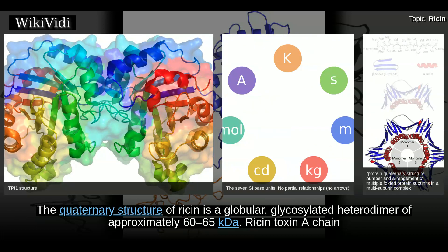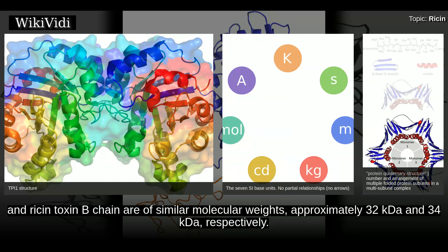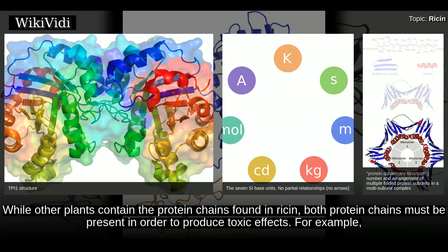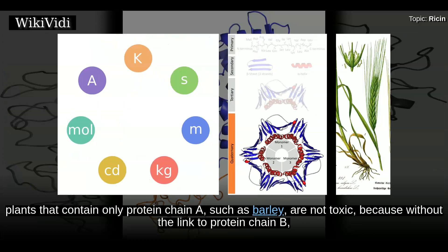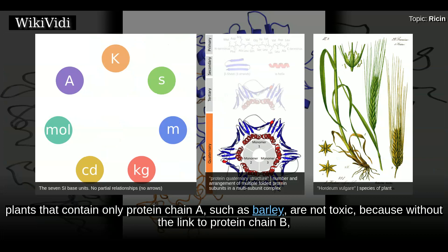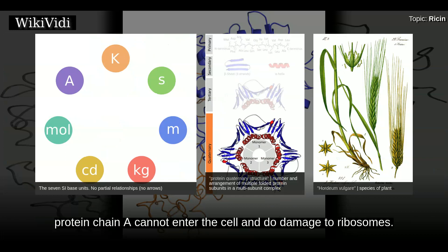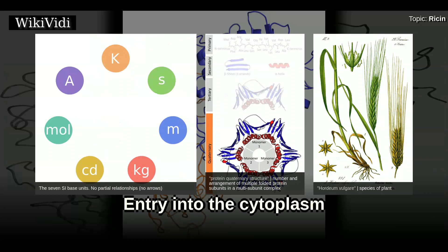The quaternary structure of ricin is a globular glycosylated heterodimer of approximately 60–65 kDa. Ricin toxin A chain and ricin toxin B chain are of similar molecular weights, approximately 32 kDa and 34 kDa respectively. While other plants contain the protein chains found in ricin, both protein chains must be present to produce toxic effects. For example, plants that contain only protein chain A, such as barley, are not toxic because without the link to protein chain B, chain A cannot enter the cell and damage ribosomes.